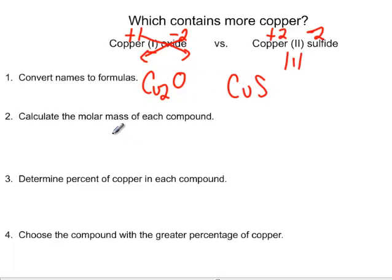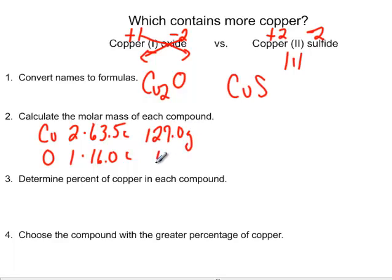The next thing we have to do is calculate the molar masses of each of these compounds. So the first formula is going to be copper and there's two of them. They each have a molar mass of 63.5 grams. Oxygen there's only one and it has a mass of 16.0. So you're going to have 127.0 grams of copper plus 16 grams of oxygen. That comes out to a grand total of 143.0 grams. So that's our first compound.